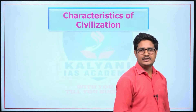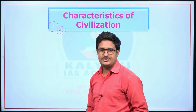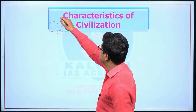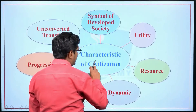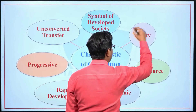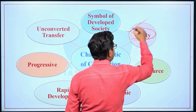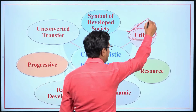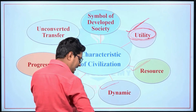Now we will see the characteristics and features of civilization. This is important — eleven-marker or five-marker questions can be asked: 'State or write the characteristics of civilization.' Civilization has the quality of utility, it works as a resource, and civilization is dynamic according to changes of the situation.